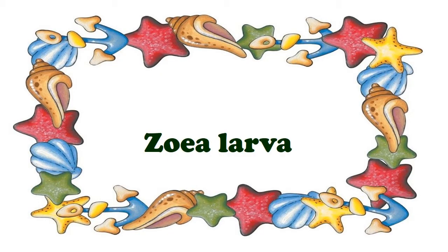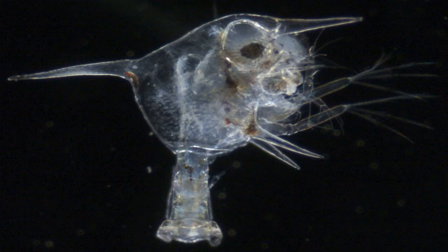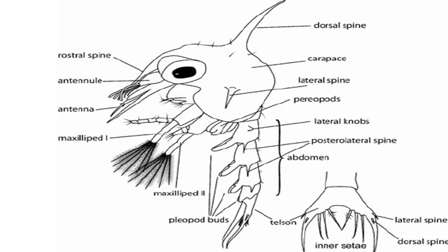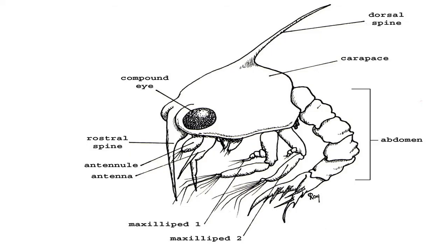Zoea: in almost all marine Decapods except the Penaeids, hatching takes place at the Zoea stage, as in true crabs. Zoea has a broad cephalothorax and a curved abdomen which assists in swimming and is provided with a forked telson. The helmet-like carapace bears two long spines, a median dorsal and a median rostrum, and two lateral spines. A pair of large stalked movable compound eyes are also present. In addition to the protozoeal appendages, there appear rudiments of the thoracic appendages of adults. Biramous maxillipedes are used for swimming.